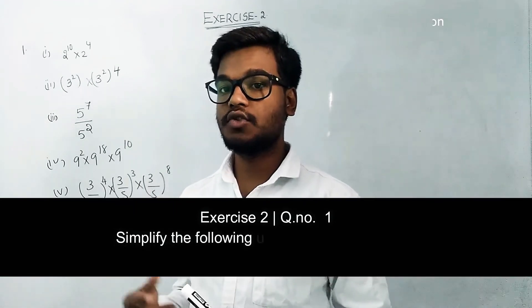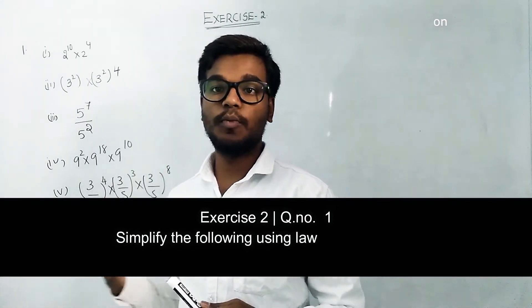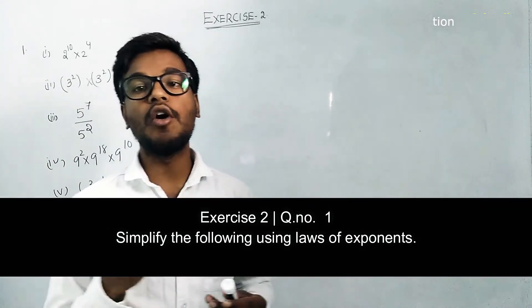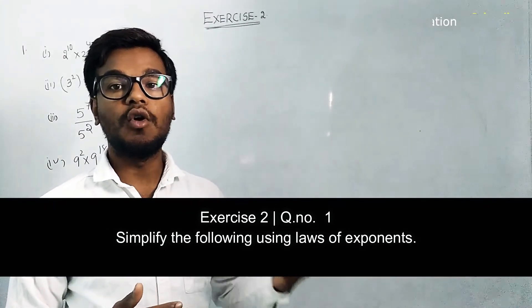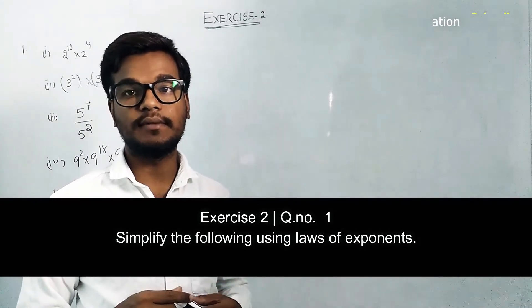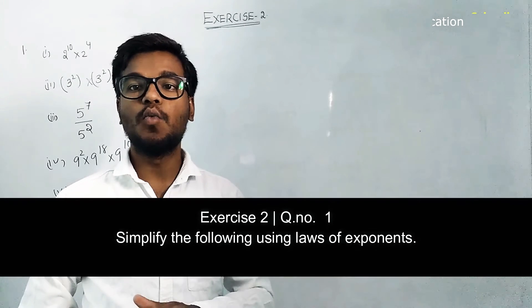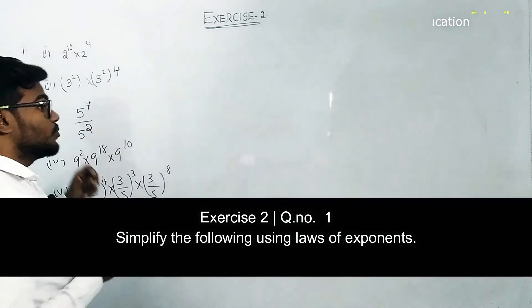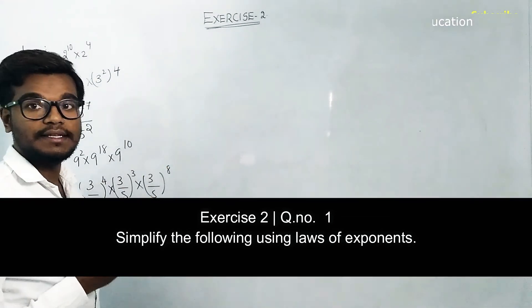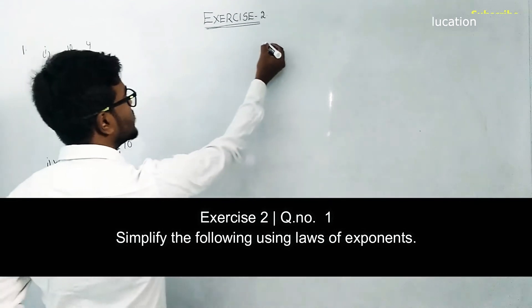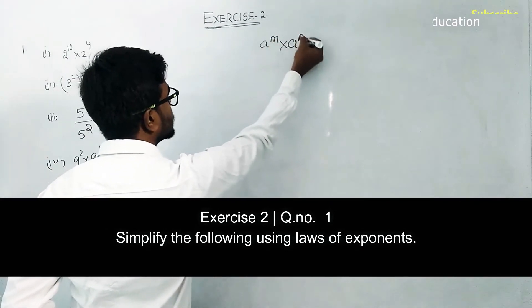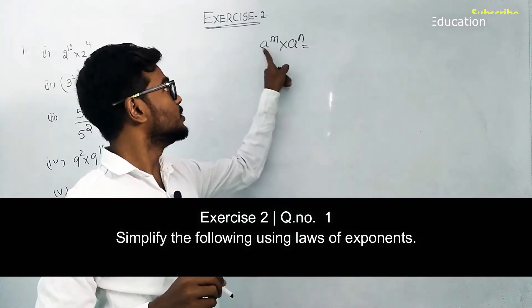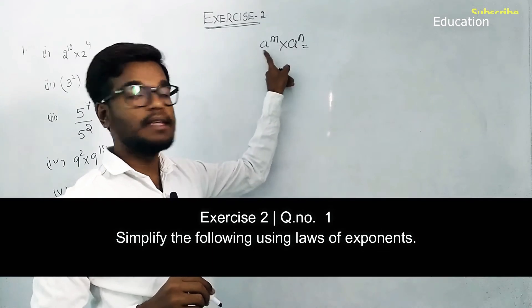The first question is 2 power 10 into 2 power 4. We need to check whether the bases are the same or the exponents are the same. Here the bases are same, so we use the formula: a power m into a power n, where the bases are the same.